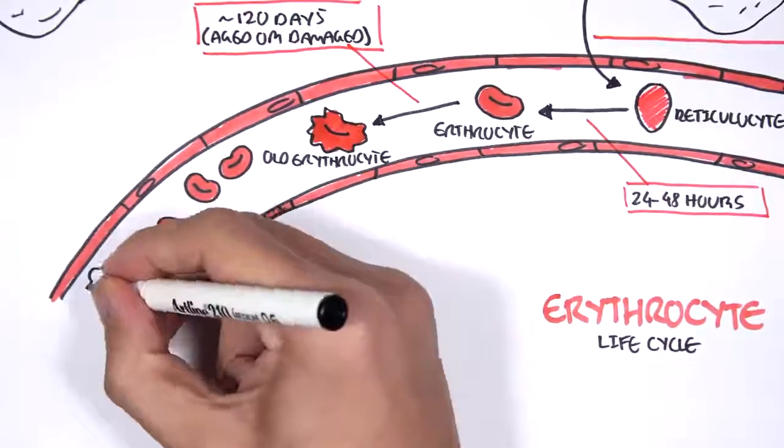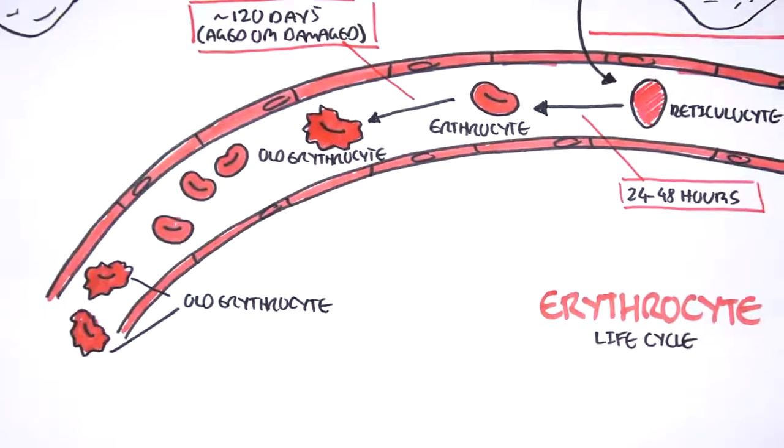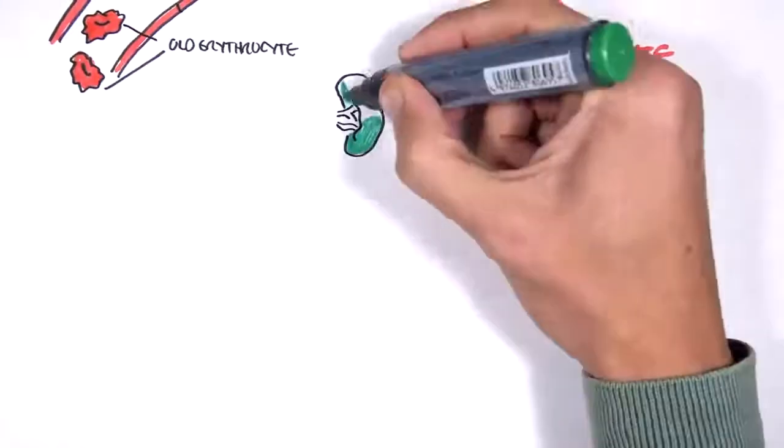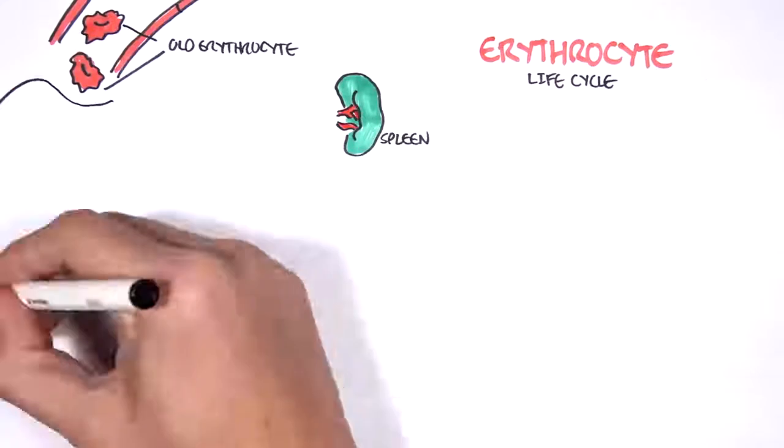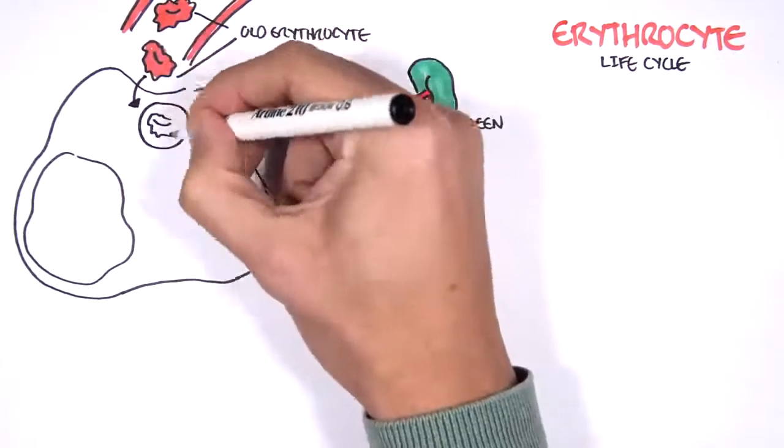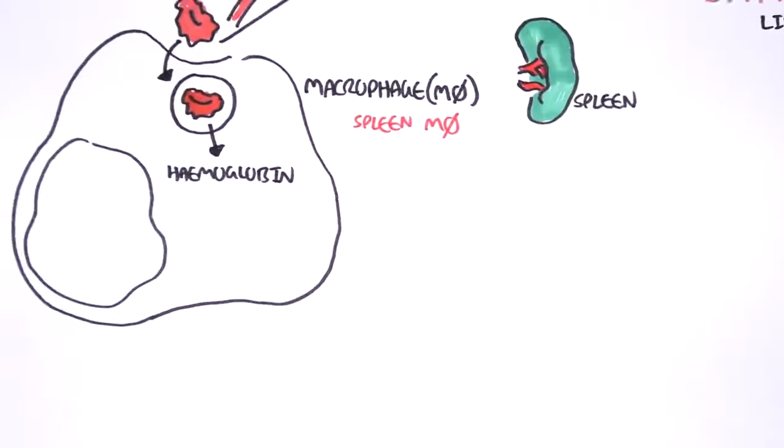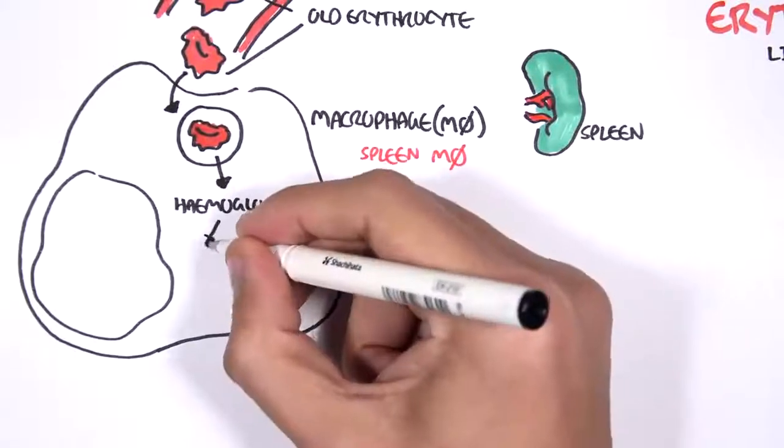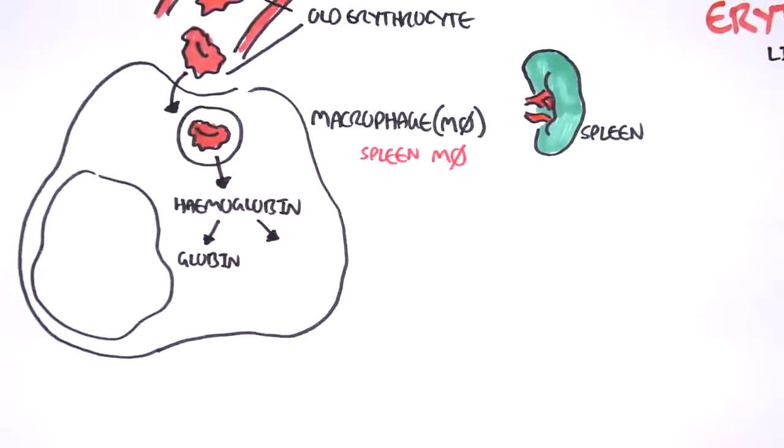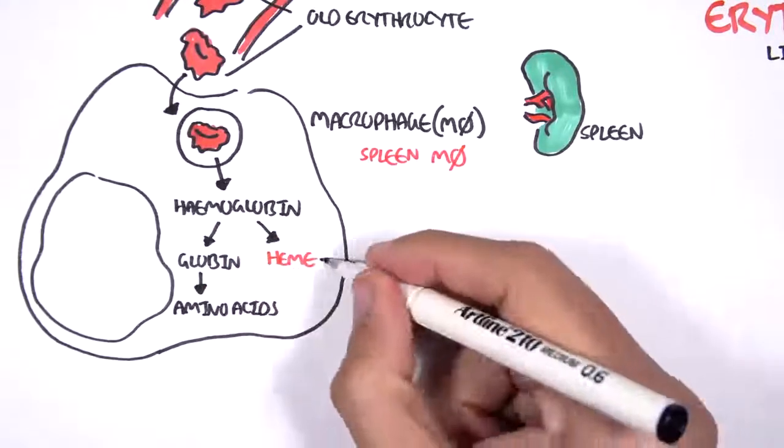So here I'm drawing a few old red blood cells that need to be cleared out. And here I'm drawing the spleen. Within the spleen we have macrophages. And it is these macrophages that will actually engulf these old erythrocytes and break them down. And so when the old red blood cells are broken down, you end up with a lot of hemoglobin. The hemoglobin can then be broken down further into globin and its heme component. Globin is then broken down to amino acids.